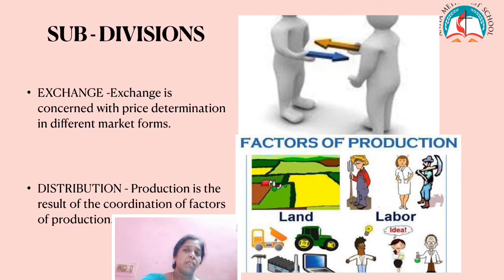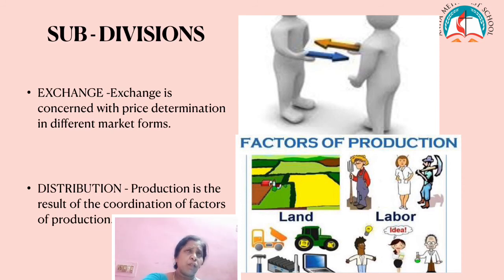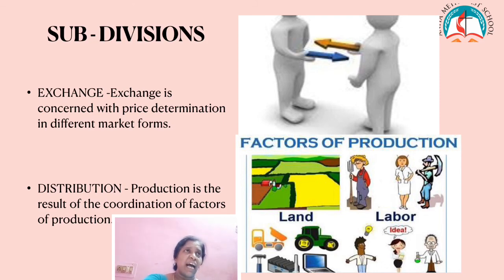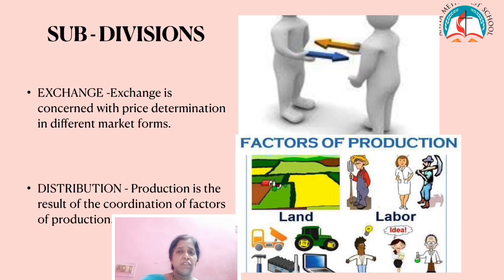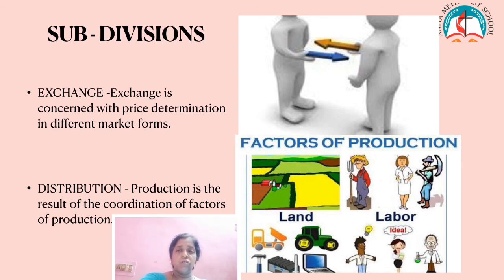Distribution: production is the result of the coordination of the factors of production — land, labor, capital, and organization. To produce a commodity, we need all these factors of production. The produced wealth has to be distributed among the cooperative factors — the rewards have to be given to the various factors of production. For land, it is rent; for labor, it is wages; for capital, it is interest; and for organization, it is profit. These are the various rewards for the factors of production, and this is known as distribution.